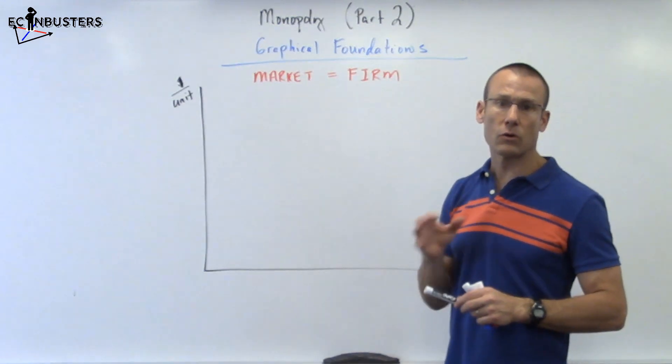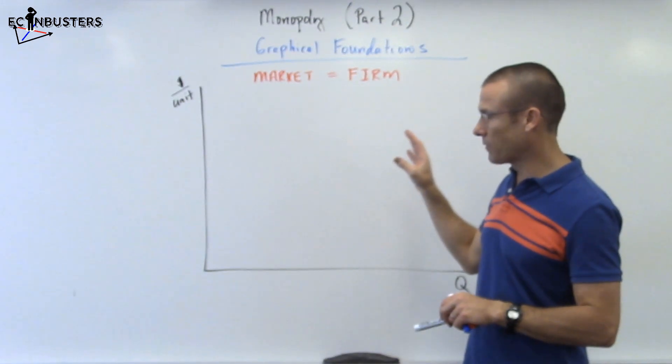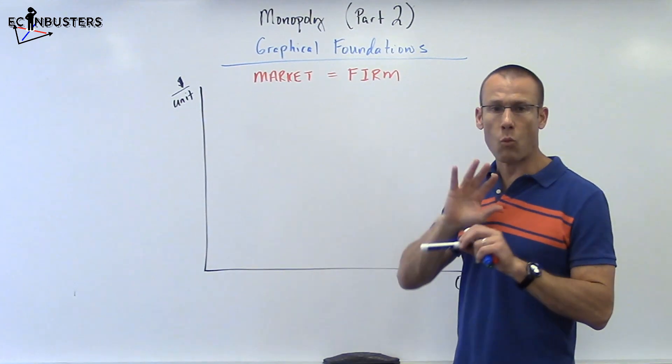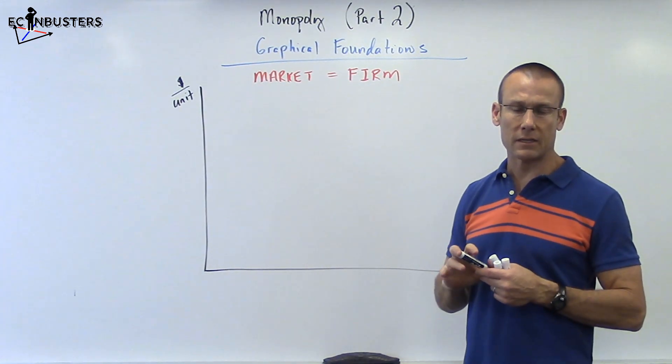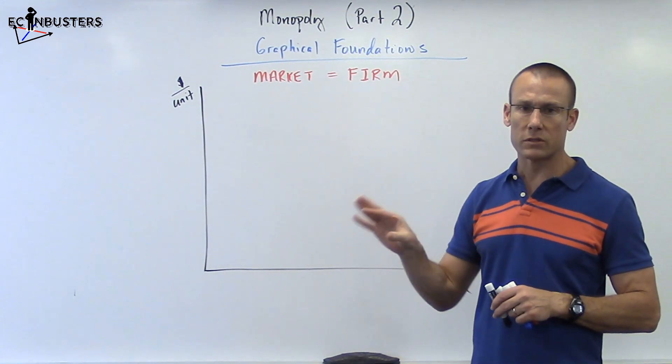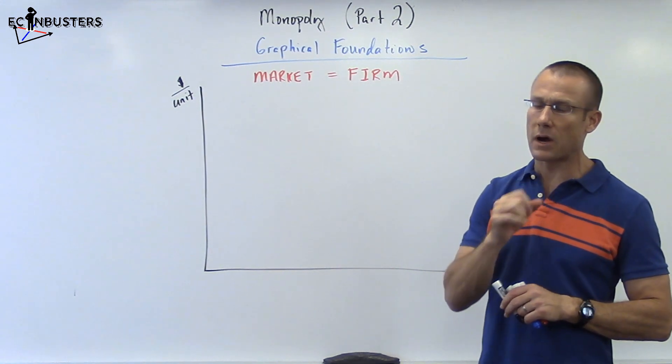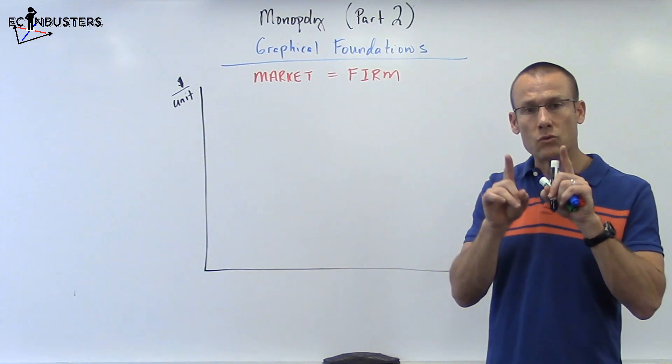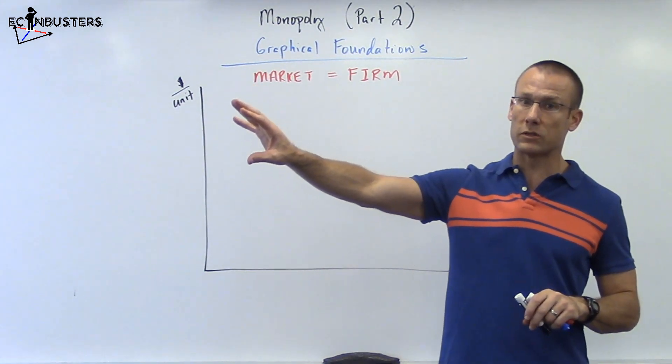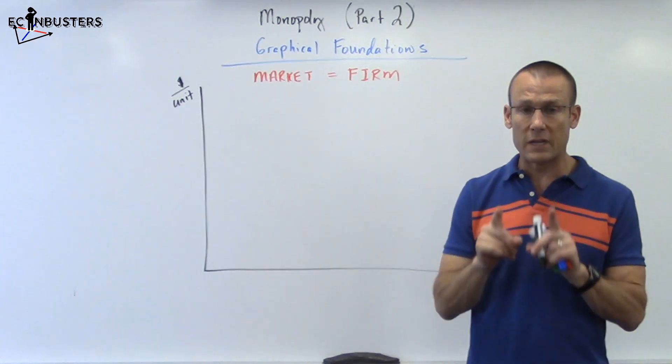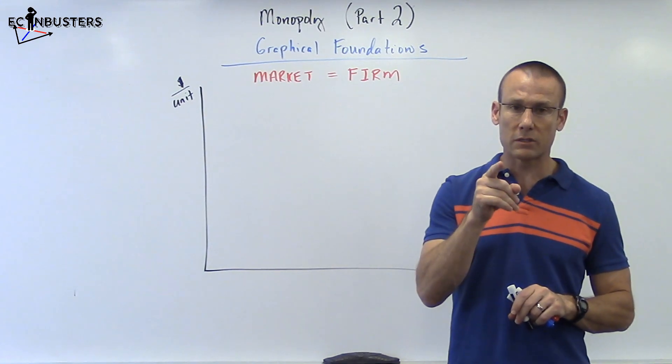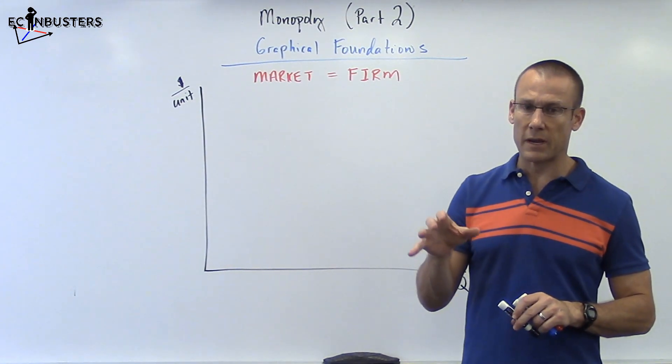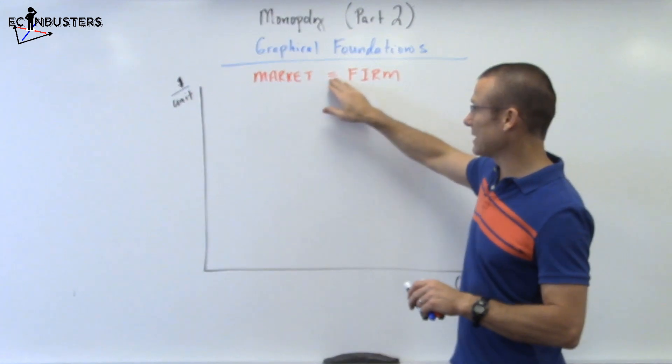This one we're calling Graphical Foundations. First of all, first thing we take note of, one graph. No side-by-side analysis for Monopoly. Never. Why? Because of product differentiation. The firm is making a unique product. There might be a lot of close substitutes, but the firm is making a unique product. Therefore, the market demand curve is the firm's demand curve. Market equals firm.